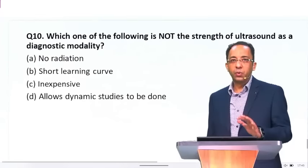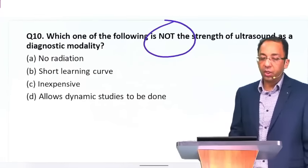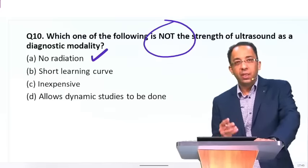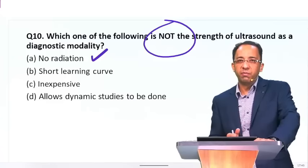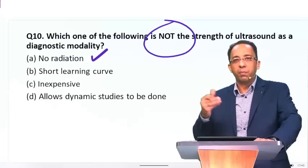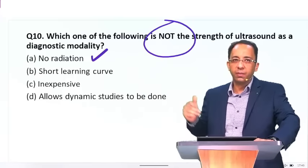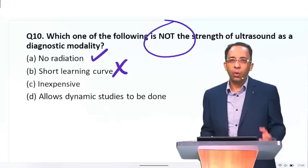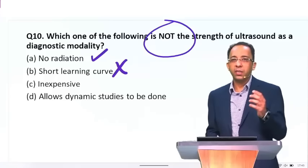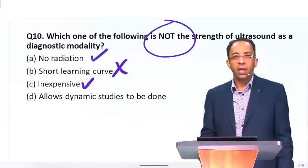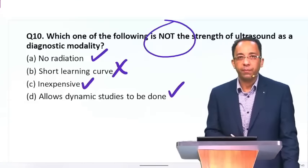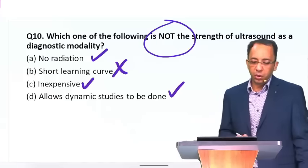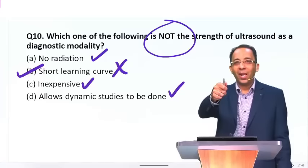The final question: which of the following is not a strength of ultrasound as a diagnostic modality? There is no radiation exposure — correct; ultrasound is safe in pregnancy with no ionizing radiation. It has a short learning curve — no, that is not correct. Ultrasound takes time to learn; the only drawback of ultrasound is that it is operator skill dependent. It is inexpensive — correct. It allows dynamic studies — correct. It allows you to guide procedures — correct. The only choice which is not correct is B — short learning curve.